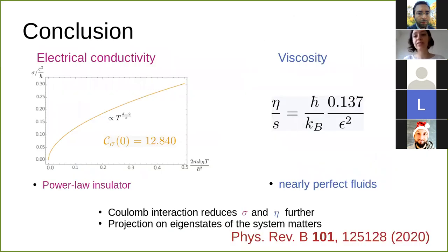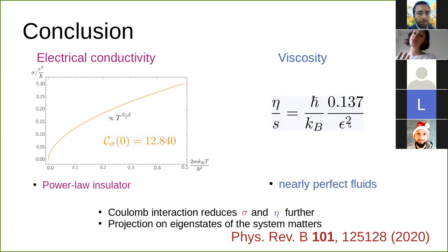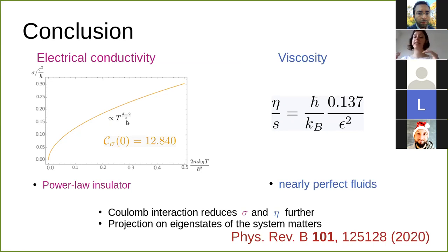To summarize: the electrical conductivity behaves as a power law insulator. The ratio of viscosity over entropy is 0.137 over epsilon squared, which means these Luttinger semimetals are also nearly perfect fluids. The Coulomb interaction reduces our electrical conductivity and also the viscosity. The projection onto the eigenstates of the system is really crucial and has a huge impact on the results. For further details I would refer you to our paper. Thank you for your attention — I'm happy to answer any questions.